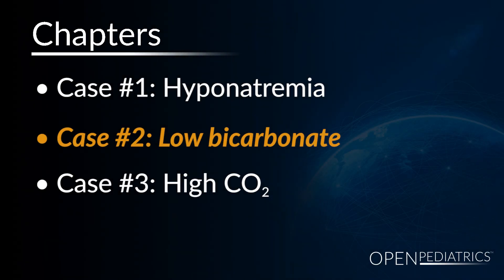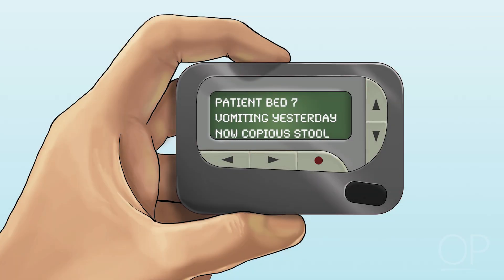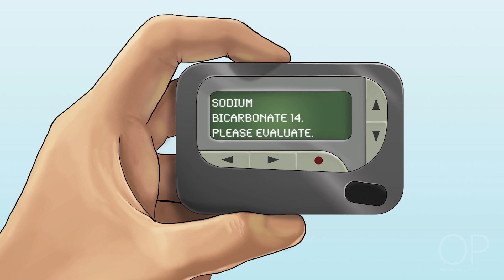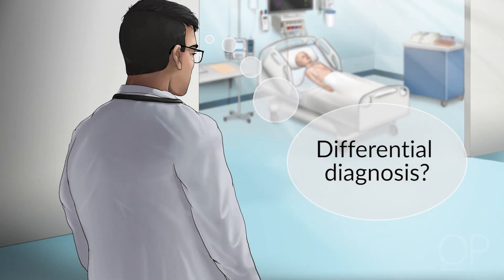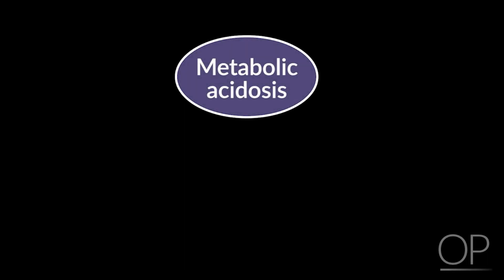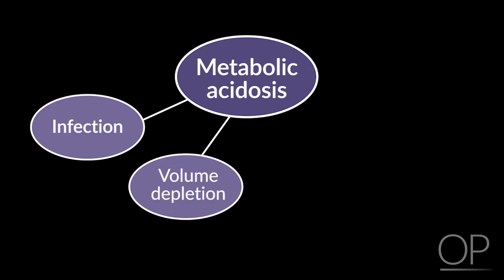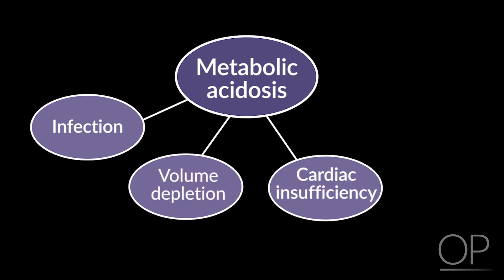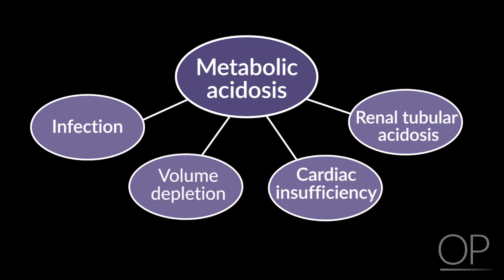Case 2, low bicarbonate. You receive a page from the nurse: the patient was vomiting yesterday and now he's stooling out. Why do you think his bicarb is 14? For the bone marrow transplant patient with a low bicarbonate level, consider causes. Metabolic acidosis is common due to infection, volume depletion, cardiac insufficiency, or renal tubular acidosis.